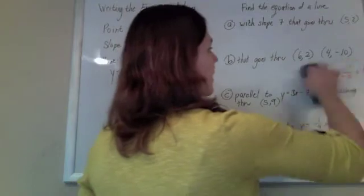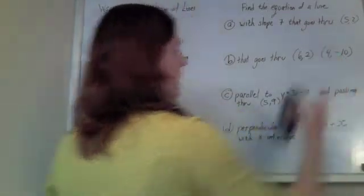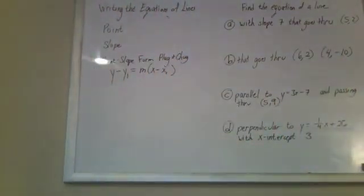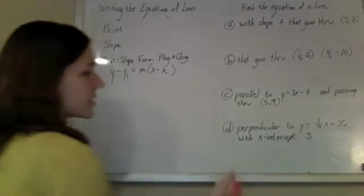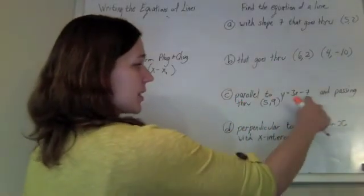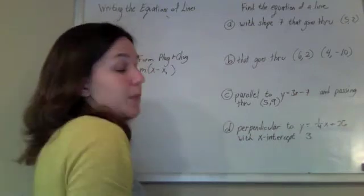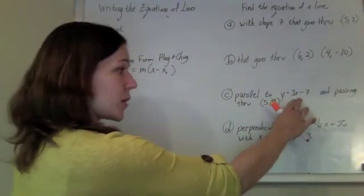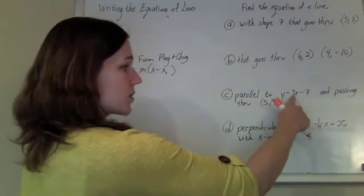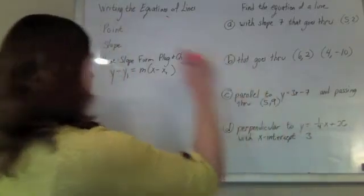Here, again, they were very rude and did not give us a slope. Instead, they gave us the slope in disguise. They say that our line is parallel to this line. Well, if our line is parallel to this line, it has the same slope as this line. So the slope of this line is 3. So the slope of our line is 3.